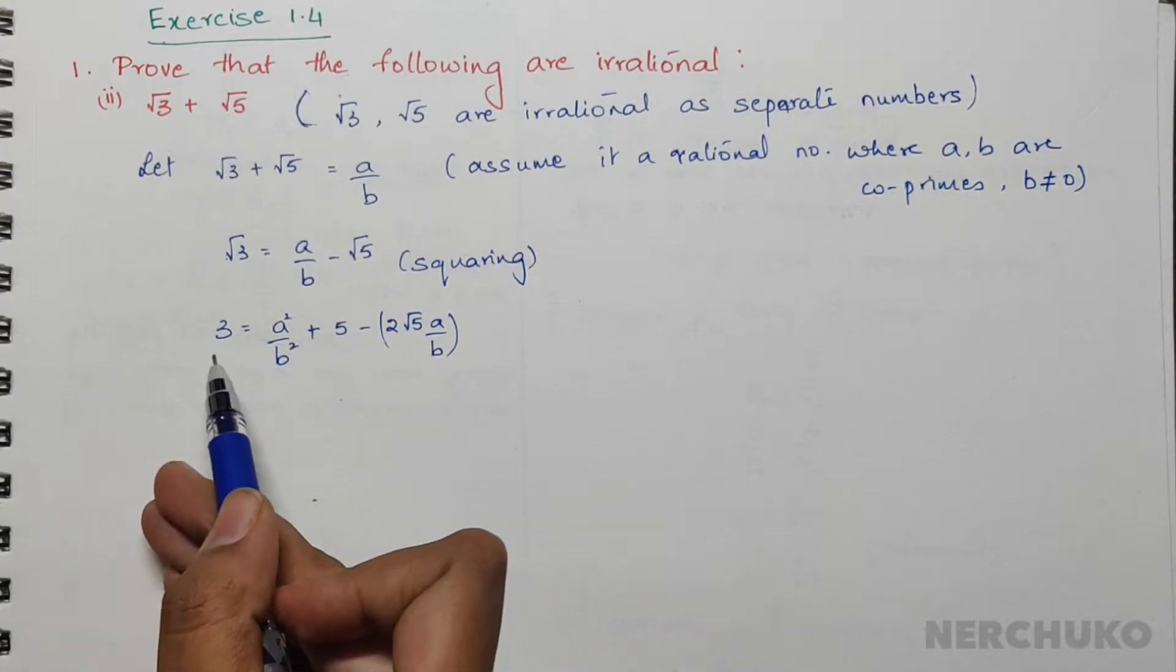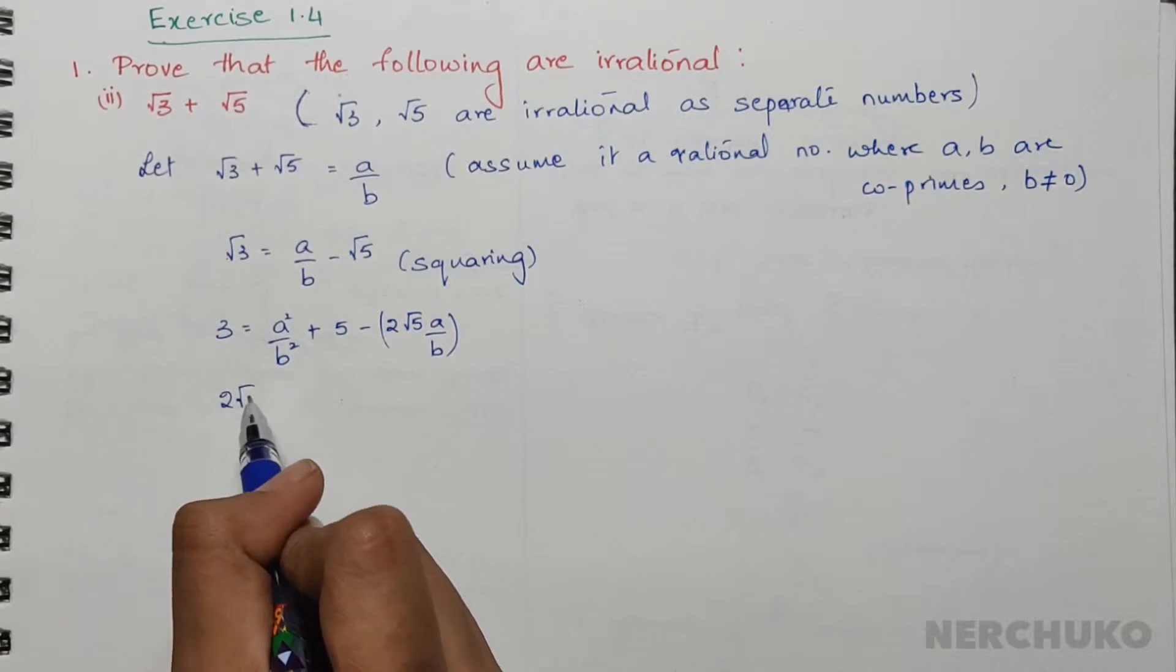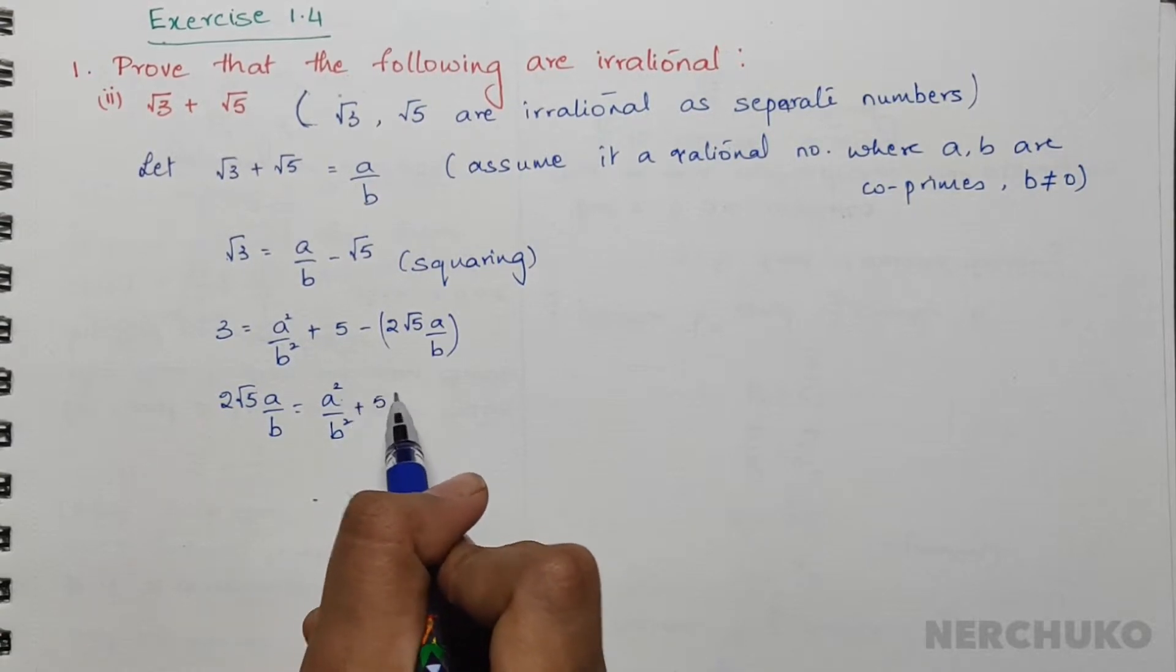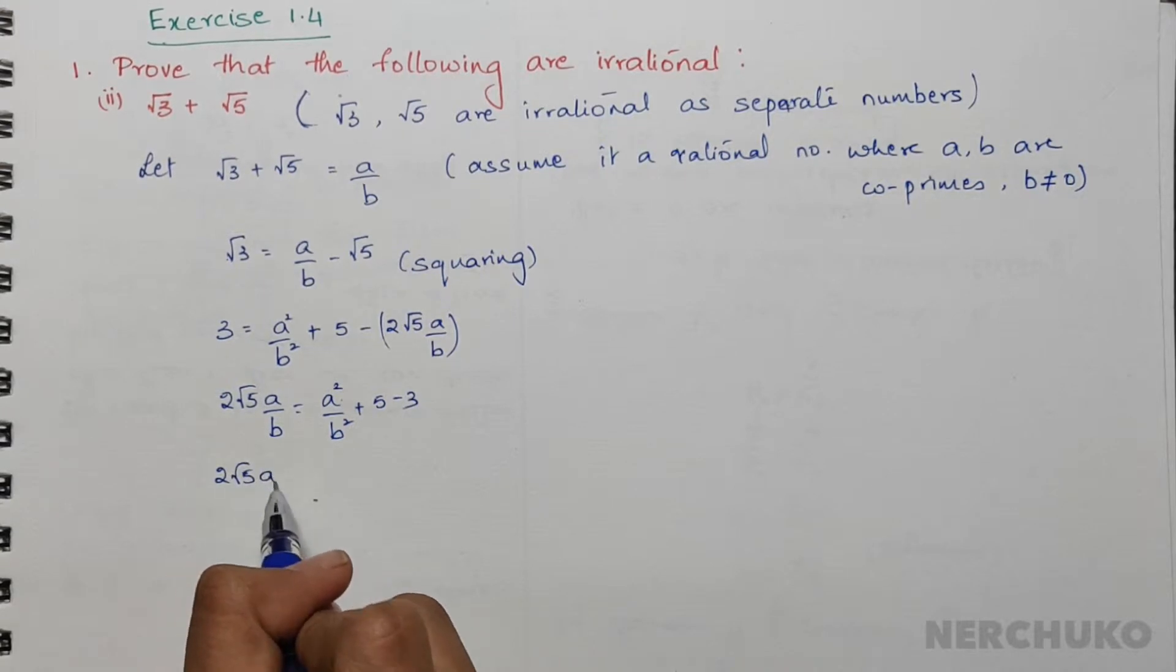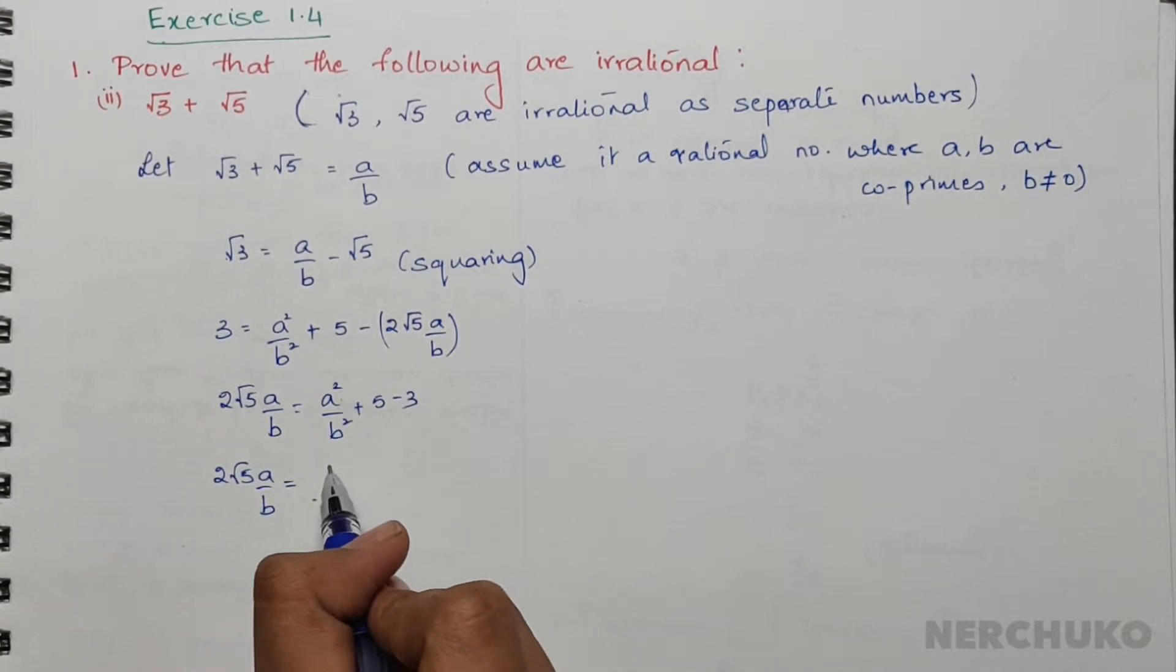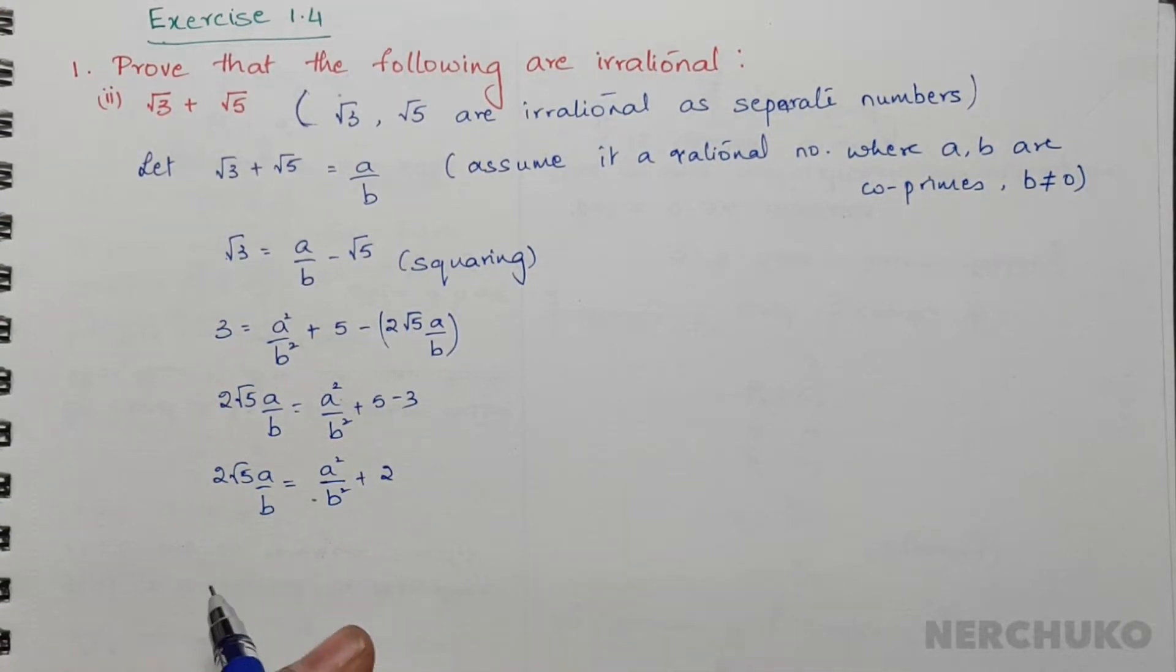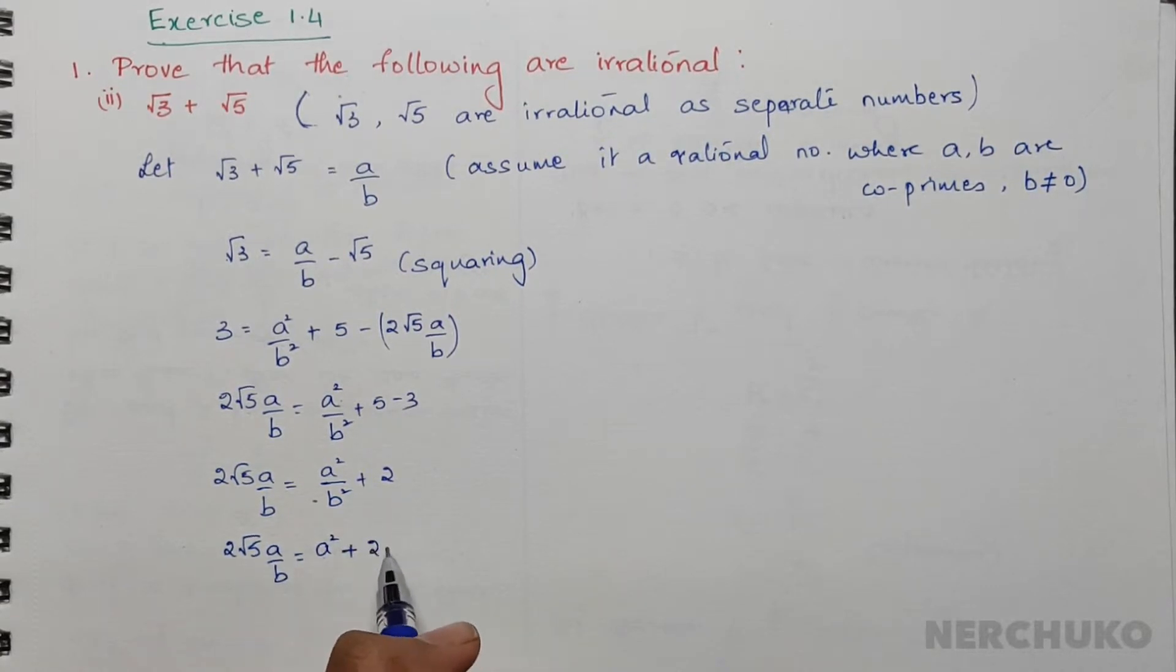Getting the a/b term on the left-hand side and 3 onto the right-hand side, we have 2√5·a/b = a²/b² + 5 - 3. So √5·a/b = a²/b² + 2. Taking LCM on the right-hand side, we have 2√5·a/b = a² + 2b²/b.